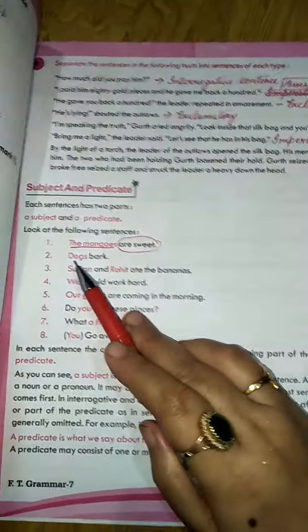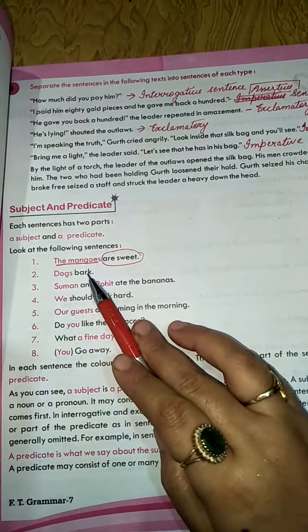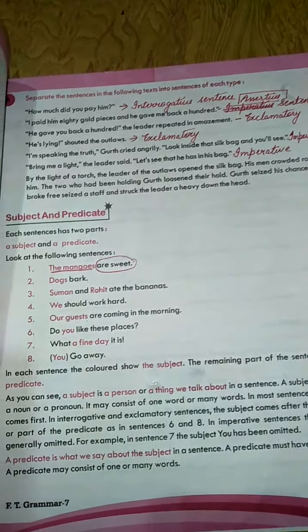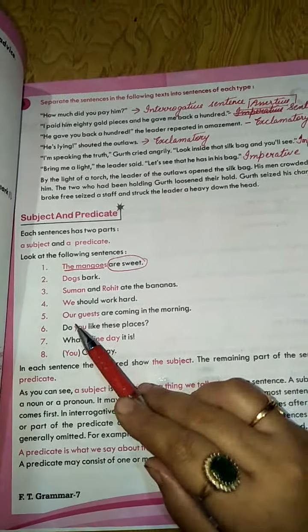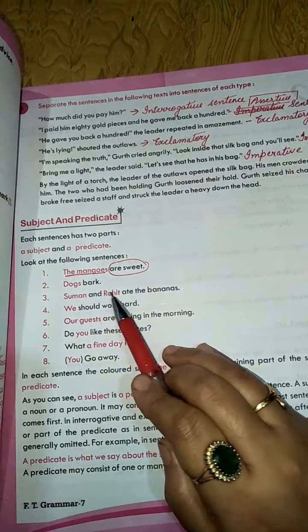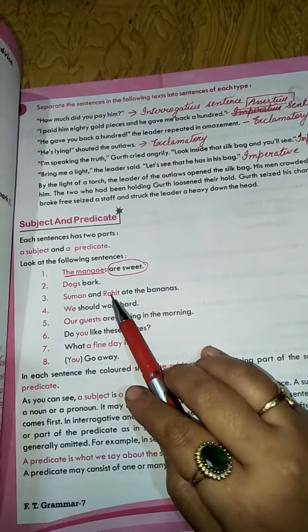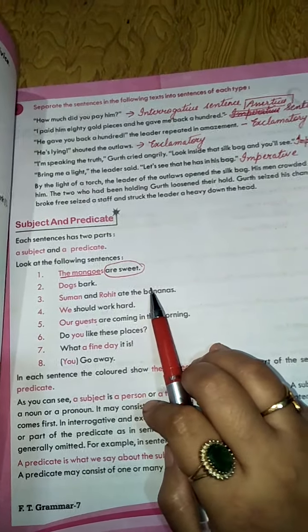So second sentence is dogs bark. Dogs, what is our subject? Bark, what is the predicate. In the third sentence, Suman and Rohit ate bananas. Suman is the subject and Rohit is also the subject, because we are talking about two subjects. So its predicate is ate the bananas.